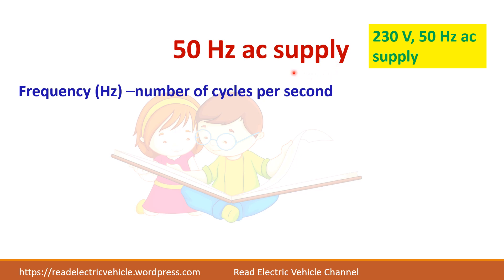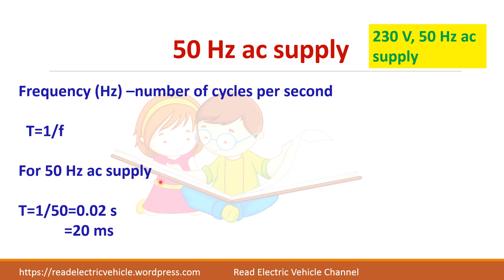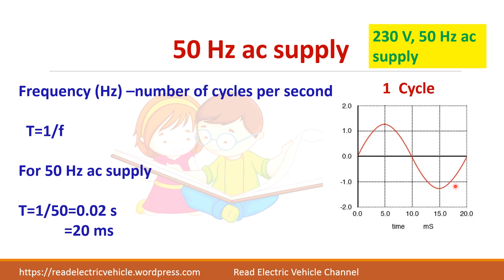For 50 Hertz AC supply, frequency is 50 cycles per second and T = 1/F = 1/50 = 0.02 second, or 20 millisecond. The waveform is drawn with the time axis in milliseconds — 20 milliseconds for one full cycle. Half of that is 10 milliseconds. The positive half cycle spans 0 to 10 ms, and the negative half spans 10 to 20 ms. Together they form one complete cycle.